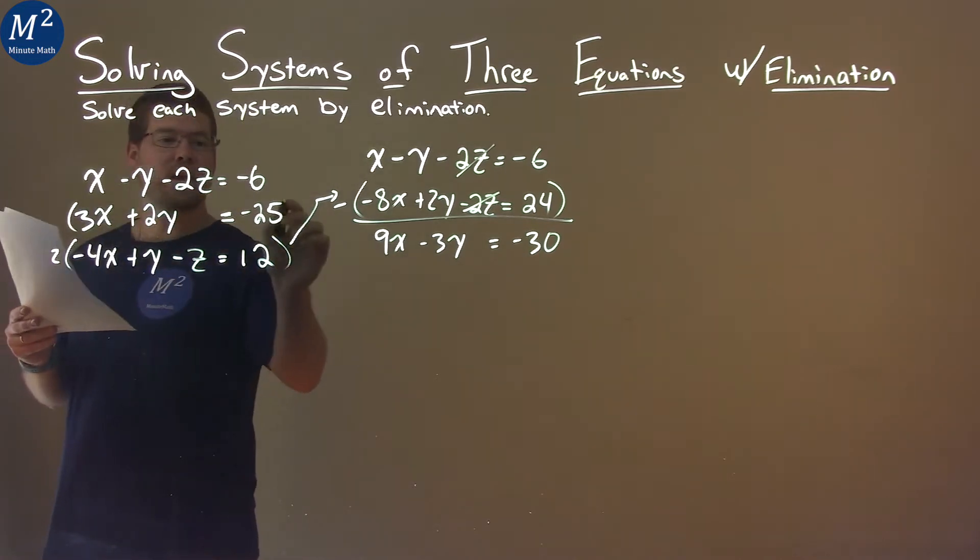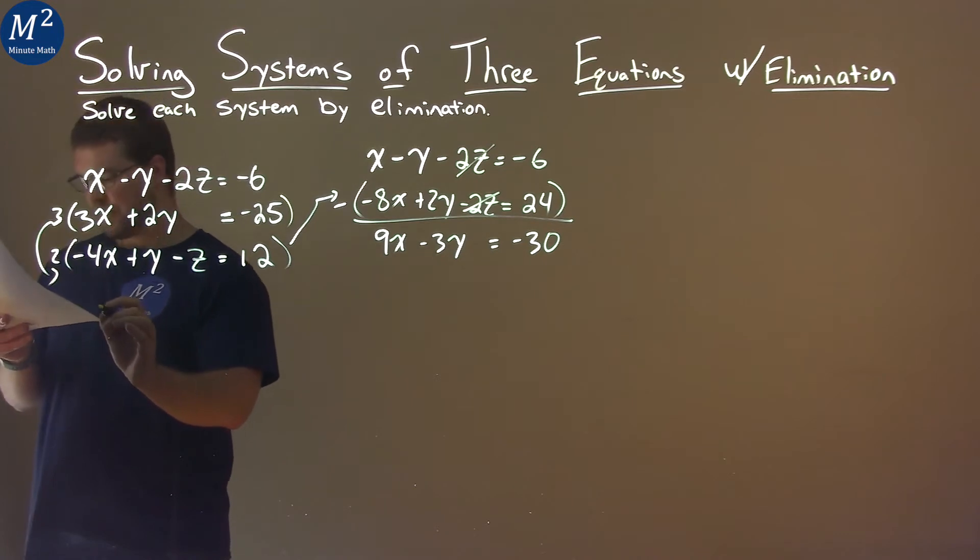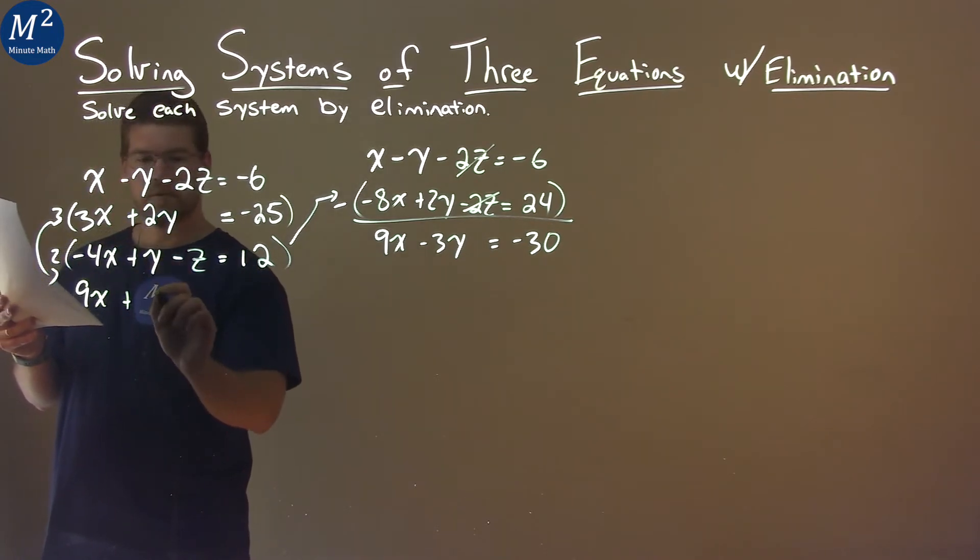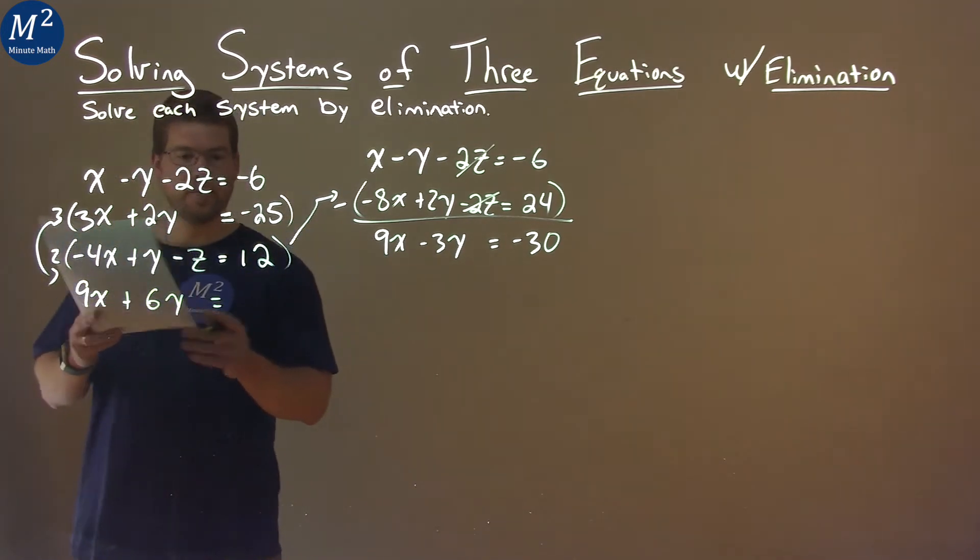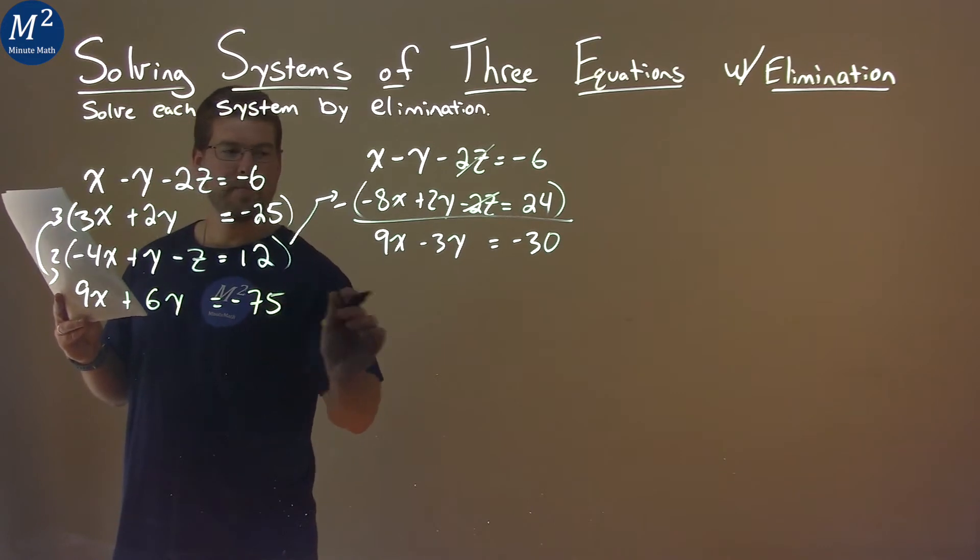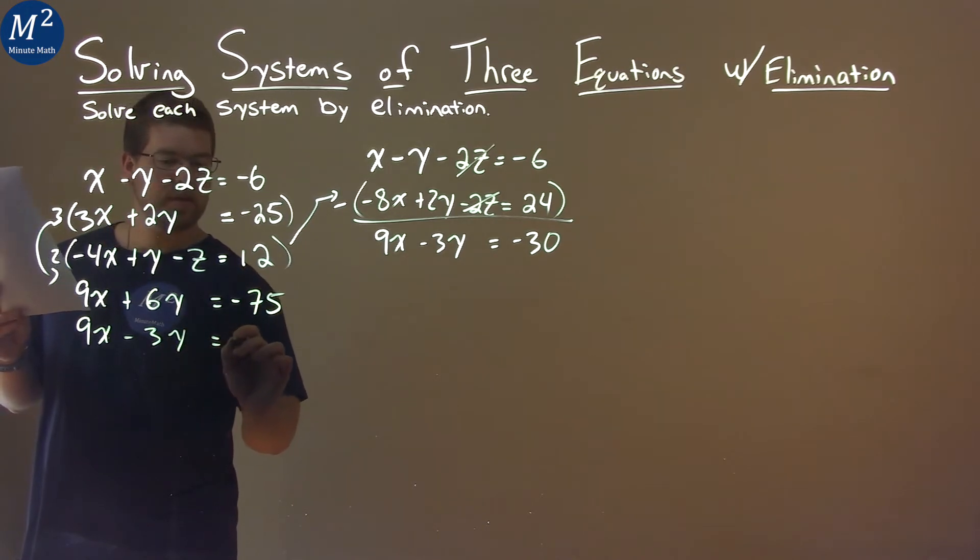I'm going to take this second equation and multiply the whole thing by 3. We have 9x now, plus 3 times 2 is 6y, equals negative 25 times 3, which is negative 75. Let's rewrite this equation underneath it: 9x minus 3y equals negative 30.